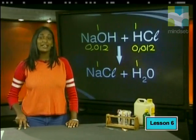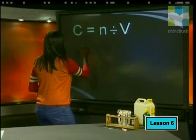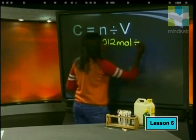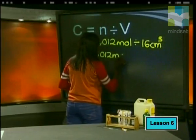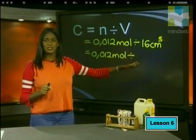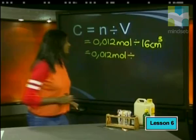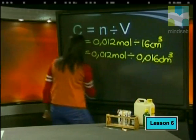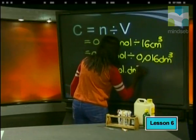Step 5: calculate the concentration of the unknown using C = n ÷ V. Our number of moles is 0.012 mol divided by our volume, which is 16 cm³. Remember to change the units from cm³ to dm³ by dividing by 1000, giving 0.016 dm³. We then get an answer of 0.75 mol·dm⁻³.